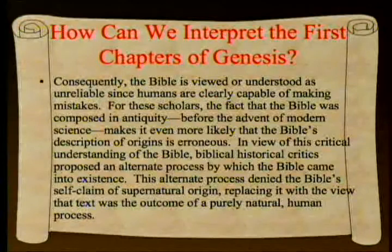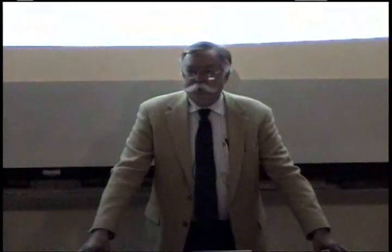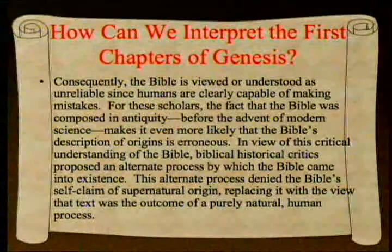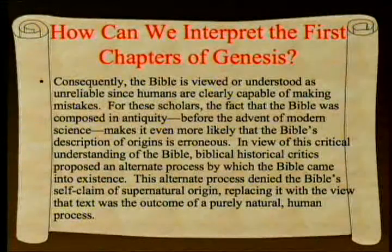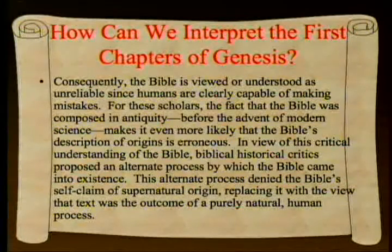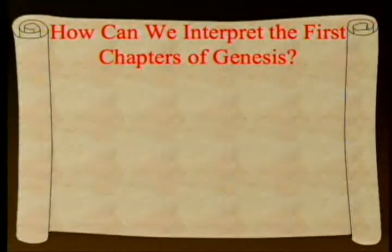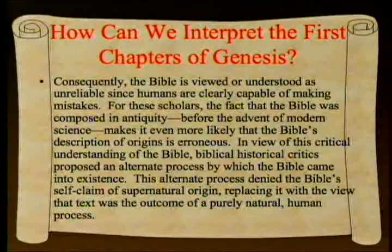Consequently, the Bible is viewed as unreliable, since humans are clearly capable of making mistakes—and in fact, they've made what are seen as obvious mistakes. The fact that the Bible was composed in antiquity before the advent of modern science makes it even more likely, for these scholars, that its description of origins is erroneous. Biblical historical critics proposed an alternate process by which the Bible came into existence, denying its self-claim of supernatural origin and replacing it with the view that the text was the outcome of a purely natural human process.